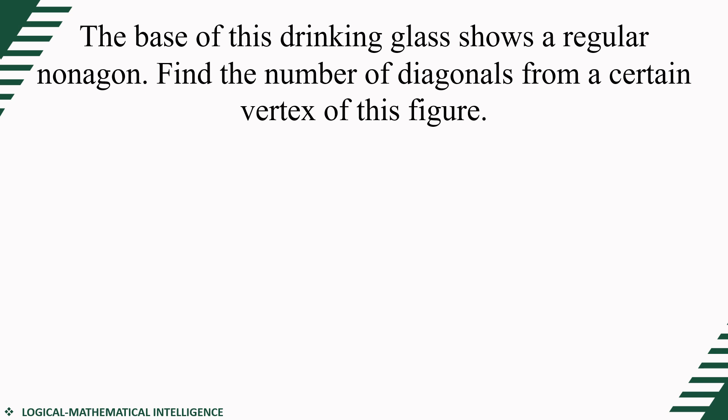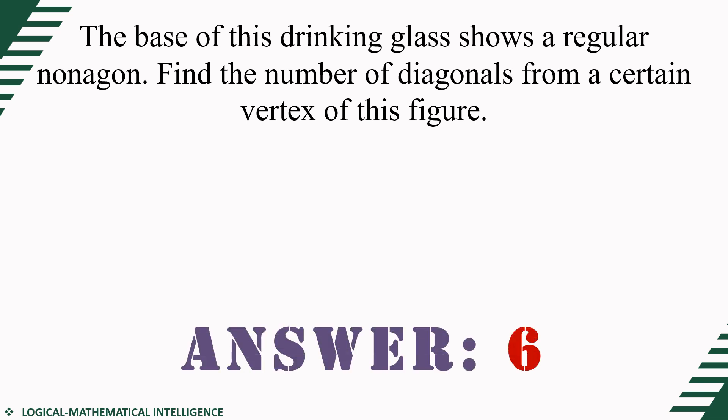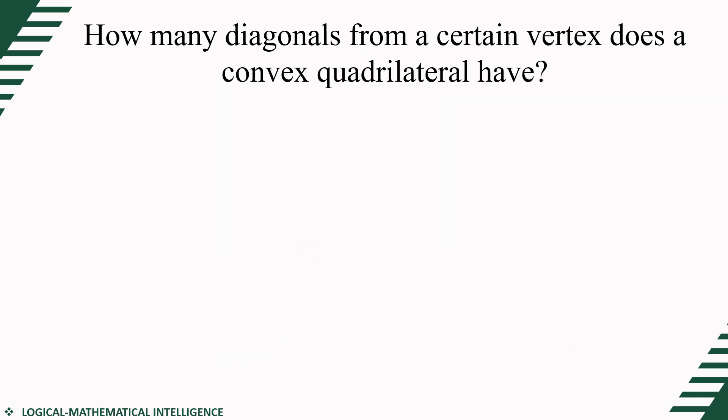First problem: the base of this drinking glass shows a regular nonagon. Find the number of diagonals from a certain vertex. The answer is 6. Using the formula for diagonals from one vertex — n minus 3 — since a nonagon is a nine-sided polygon: 9 minus 3 equals 6.